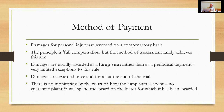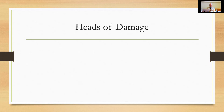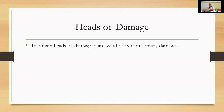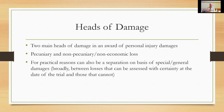There is no monitoring by the court of how the lump sum is spent, so there's no guarantee that the plaintiff will spend the award on the losses for which damages have been awarded. The heads of damage for personal injury are two main categories: pecuniary and non-pecuniary — or non-economic — loss. For practical reasons there is also a separation between special and general damages, broadly between losses that can be assessed with certainty at the date of trial and those that cannot; pre-trial medical expenses often fall within the first category.